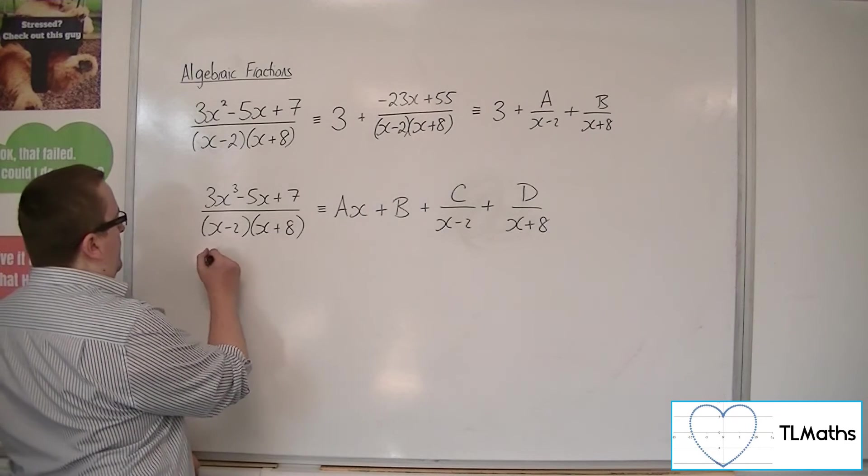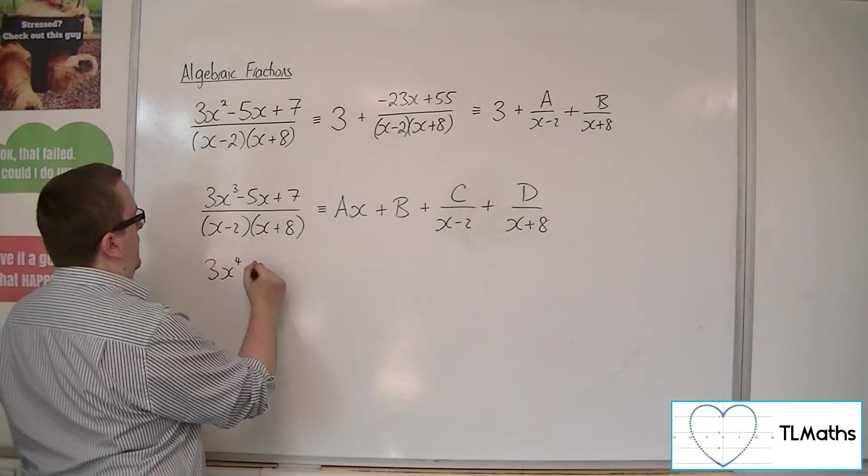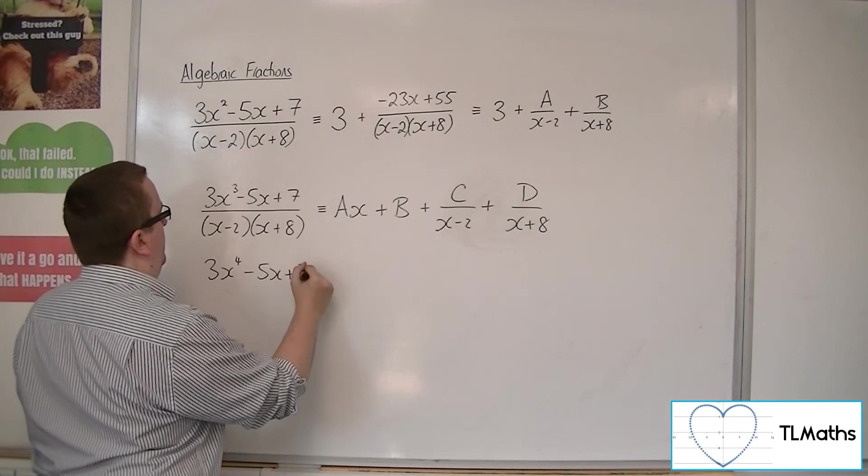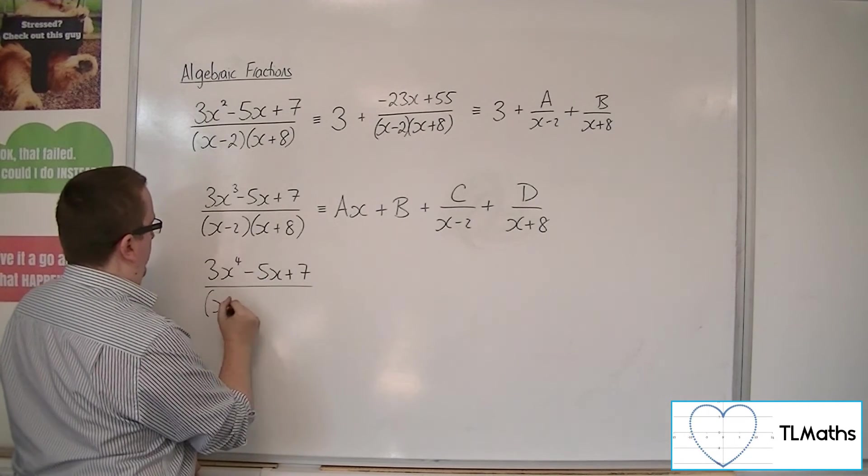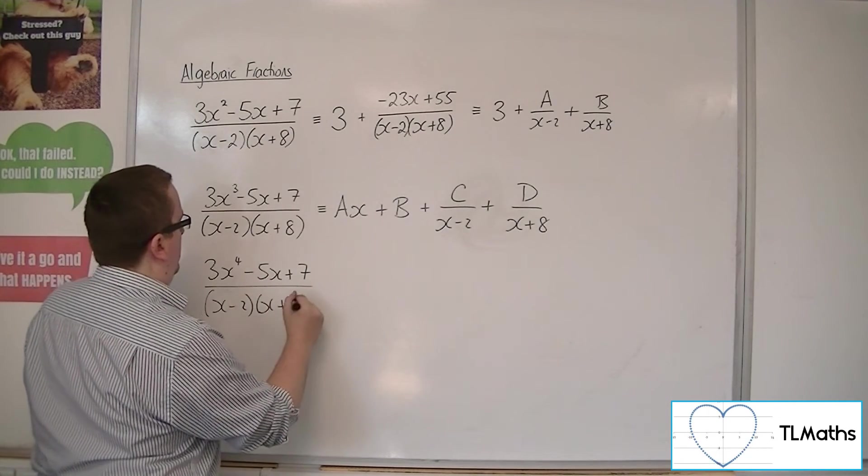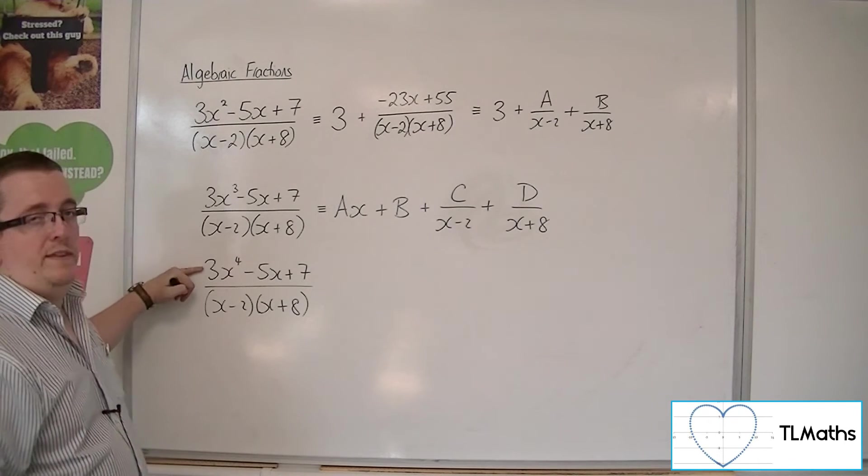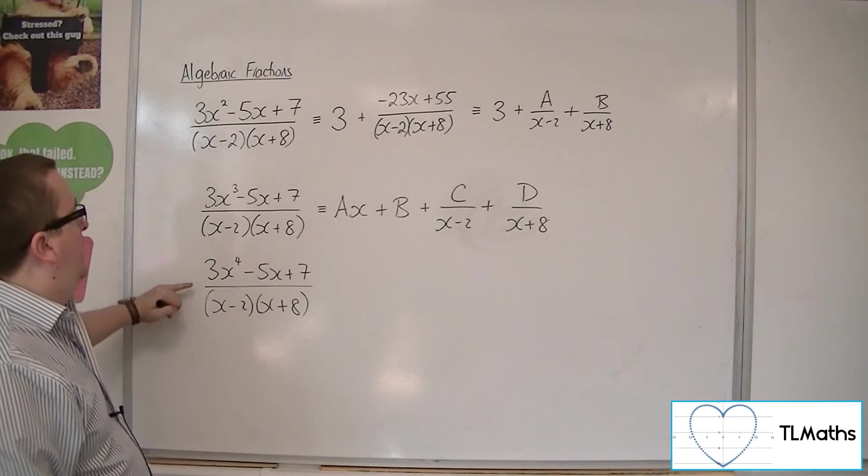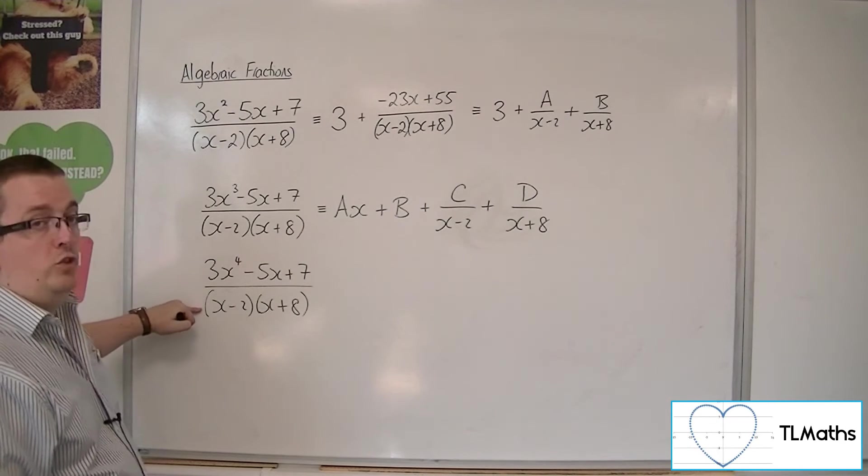If I had 3x to the 4 minus 5x plus 7 over x minus 2 times x plus 8, now I've got a quartic in the numerator and a quadratic in the denominator.